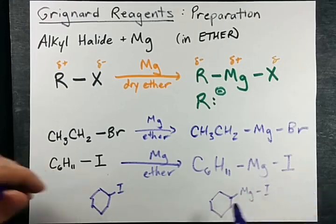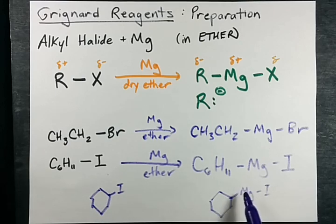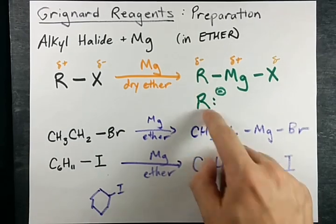MgI. It's the exact same thing, but you put an Mg in between the carbon chain and the iodine. Now, let me emphasize here that R can attack things that are delta plus.